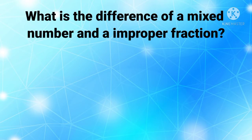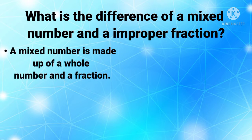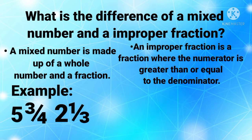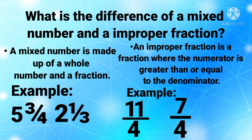Before we start, let's learn the difference between a mixed number and an improper fraction. A mixed number is made up of a whole number and a fraction — examples are 5 and 3/4, 2 and 1/3, and many more. Meanwhile, an improper fraction is a fraction where the numerator is greater than or equal to the denominator — examples are 11/4 and 7/4.